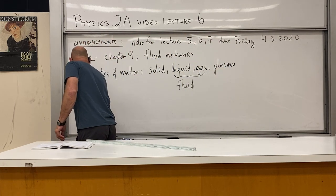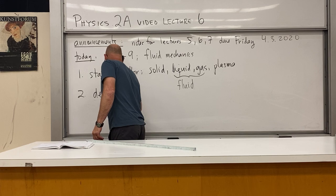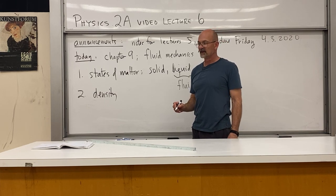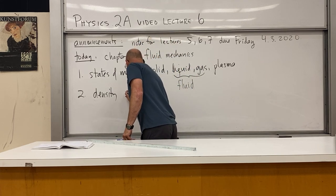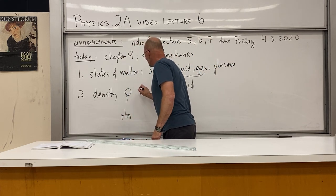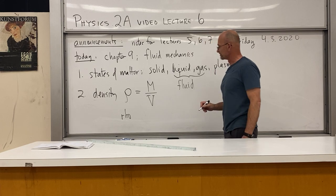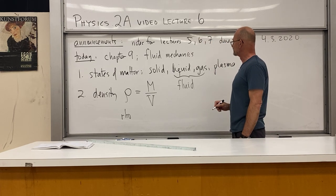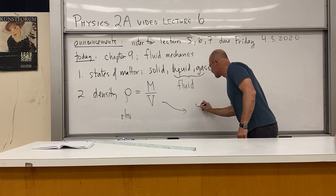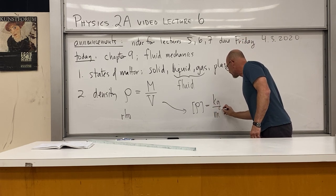Next we introduce the concept of density. We take a certain amount of mass occupying a certain volume. The density — using the Greek letter rho — is equal to the mass divided by the volume: mass per unit volume. The standard units are kilograms per meter cubed, also written as kg/m³.